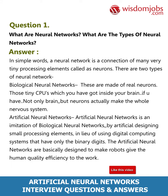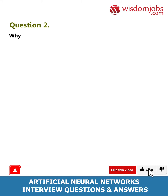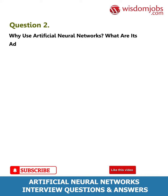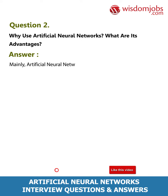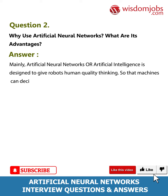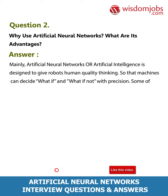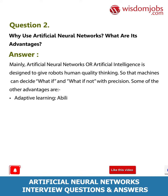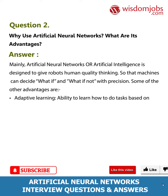Question 2: Why use artificial neural networks and what are its advantages? Mainly, artificial neural networks or artificial intelligence is designed to give robots human-quality thinking so that machines can decide 'what if' and 'what if not' with precision. Some additional advantages include adaptive learning: the ability to learn how to do tasks based on the data given for training or initial experience.